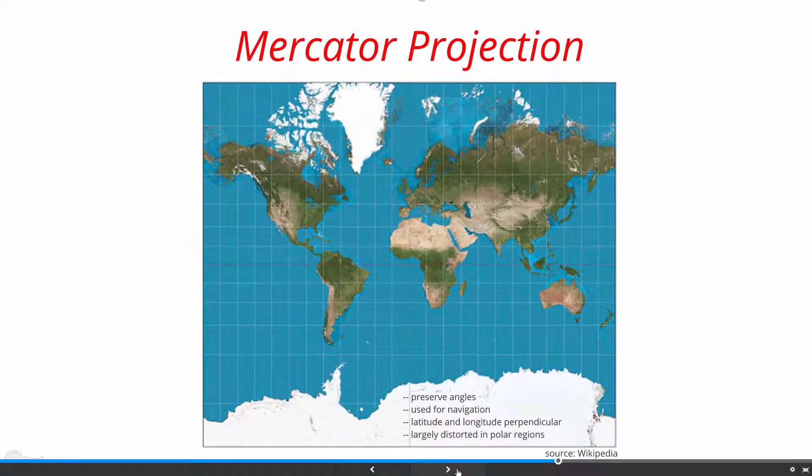The Mercator projection preserves angles, and hence it is good for navigation. We can see that all the longitudes and latitudes are perpendicular to each other. The distortion is large in the polar regions.